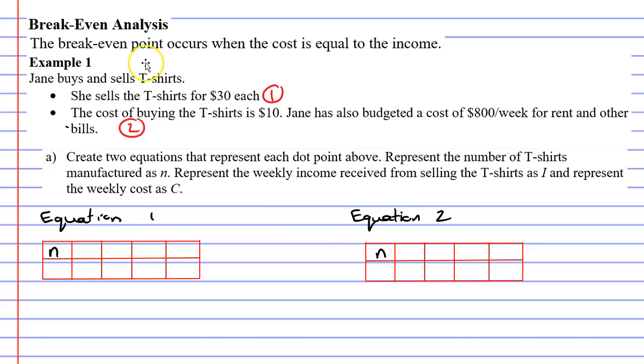The bottom row is going to be different for both of them. If we look at dot point one or equation one, it's talking about an income. It's talking about the money they make from selling t-shirts. And we're told that we're supposed to represent the weekly income received from selling t-shirts as I. So that's going to be the bottom row for equation one. For equation two, we're actually talking about cost. We're talking about the cost of buying t-shirts as well as the cost for rent and other bills. And we're told to use C for cost. So for equation two, we're going to have a different pronumeral in the second row.